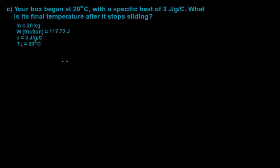So in our initial values, we've been given the mass, the work due to friction that we calculated in Part B, the specific heat and the initial temperature, and it's really important that we've been given the work due to friction, because if we hadn't have been, we probably wouldn't know where to start with this problem.